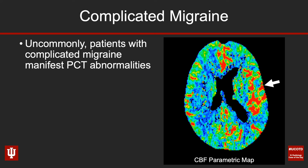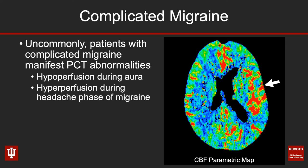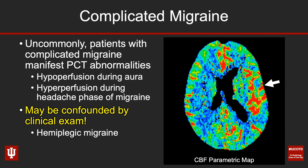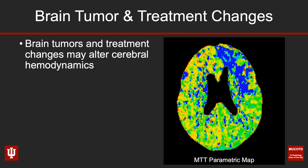You can uncommonly have perfusional abnormalities with migraines, particularly complicated migraines. During the aura phase they may have hypoperfusion; during the headache phase they may have some hyperperfusion, which is what this patient had in the left temporal lobe. This may be confounded by physical exam and clinical presentation — they may show up with a hemiplegic migraine, and that can be a very difficult thing to tease out until it starts to resolve.